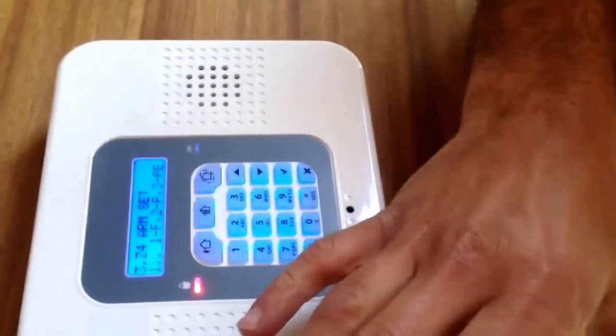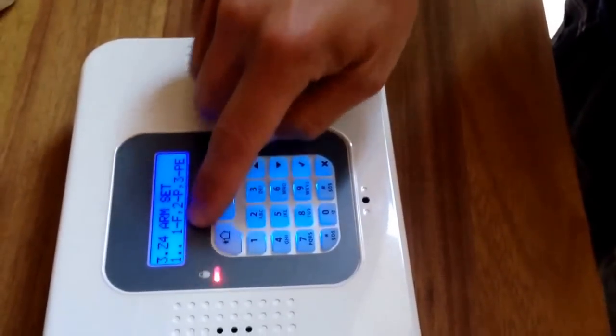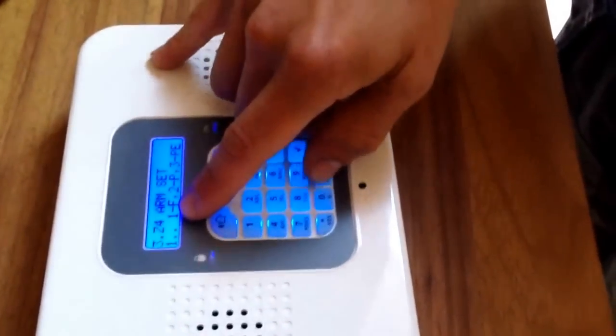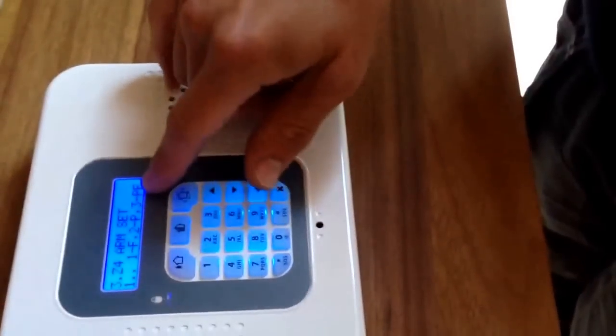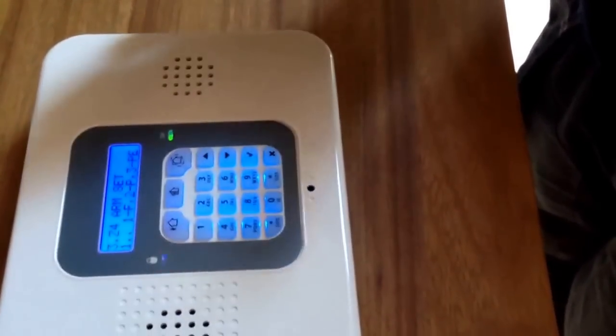So this sensor is only active on option one, a full arm. So just to repeat, at night time it won't come on with a partial arm or perimeter arm, so you can walk around upstairs.